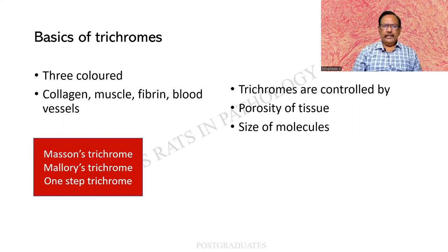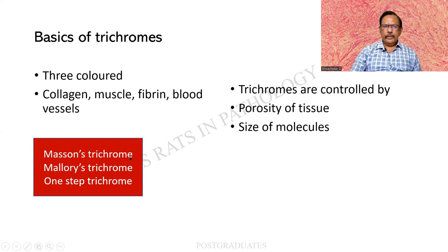Trichrome means three colors. Collagen, muscle, fibrin, and blood vessels can be demonstrated by it. There are different types of trichrome: one is Masson's Trichrome, another is Mallory's Trichrome, and then there is a one-step trichrome which may be commercial. The trichromes are controlled by the porosity of the tissue and the size of the molecules — same as the principle. We will be sticking to Masson's Trichrome.